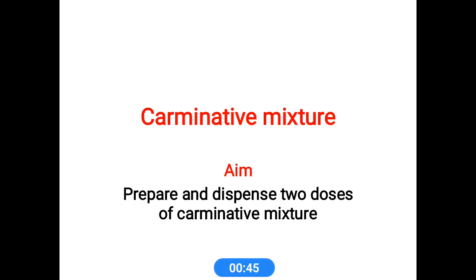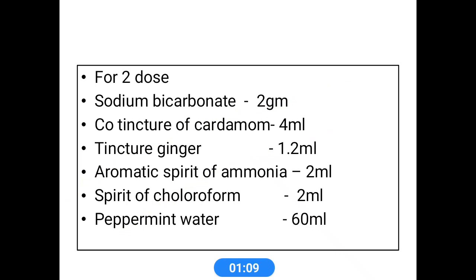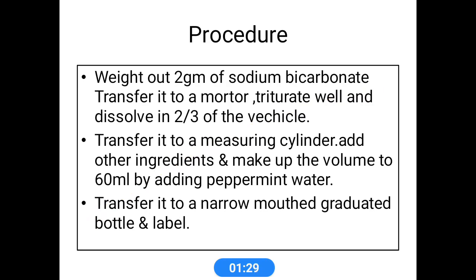First, write the aim: prepare and dispense two doses of carminative mixture. Next, write the ingredients list. The ingredients for two doses are: sodium bicarbonate, compound tincture of cardamom, tincture of ginger, aromatic spirit of ammonia, spirit of chloroform, and peppermint water.